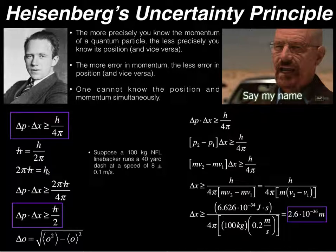Then I can take this expression for h and plug it in on the top here for h. So delta p times delta x is greater than or equal to 2 pi h bar divided by 4 pi. And canceling parts of the 2 and the pi, we get that delta p times delta x has to be greater than or equal to h bar over 2.